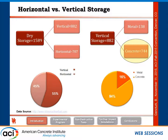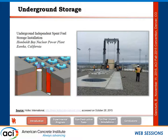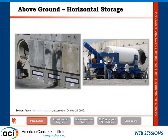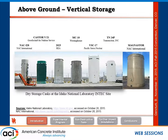These are different examples of storage types. For underground storage, you see concrete vaults with steel casks inserted. For above-ground horizontal storage, again concrete vaults with steel casks containing spent nuclear fuel inserted inside. For above-ground vertical storage — the ones shown here from Idaho — these are all steel casks where the shielding material is entirely steel with no concrete. And this is an example of a vertical concrete cask from NAC International.